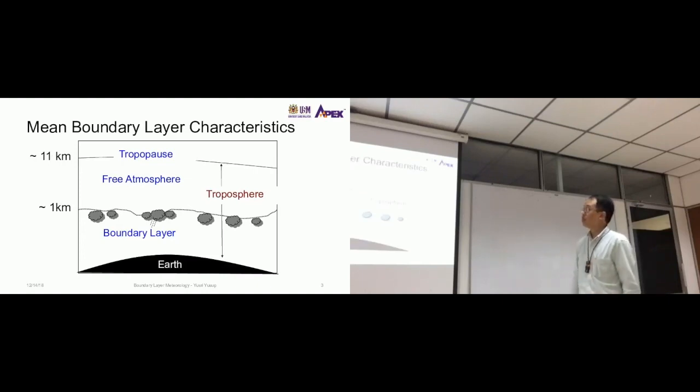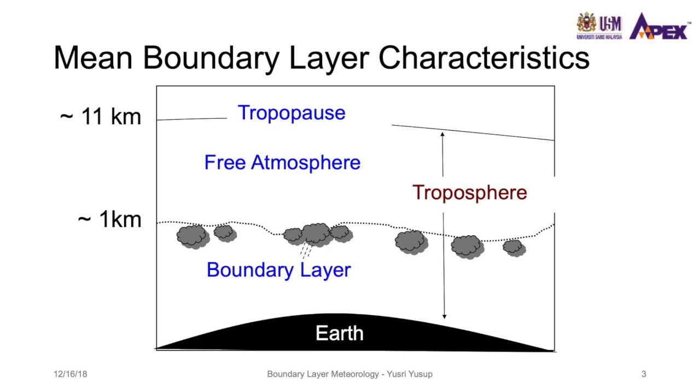So first, mean boundary layer characteristics. You've seen this many times already. This is the earth and the closest atmospheric layer to the earth is called the boundary layer. Sometimes we can guess the height of the boundary layer by the presence of cloud. The bottom-most layer, the height of the cloud, gives us a hint of how high the boundary layer is. If you know the height between the earth and the cloud is about one kilometer, then you can guess the height of the boundary layer to be about one kilometer.